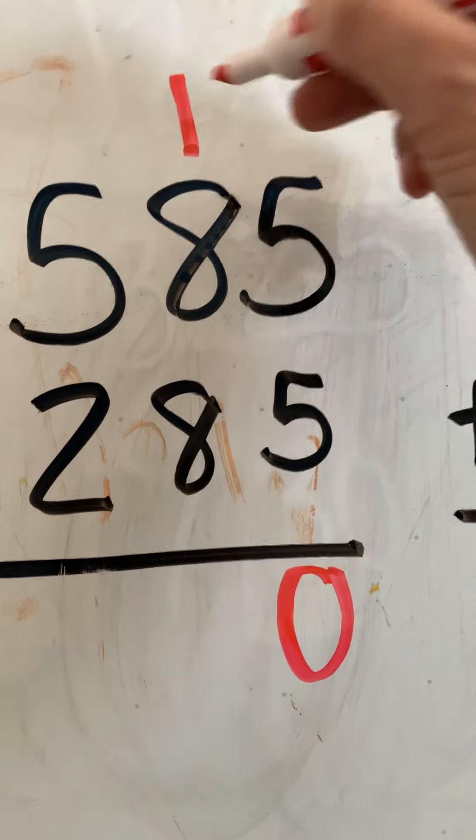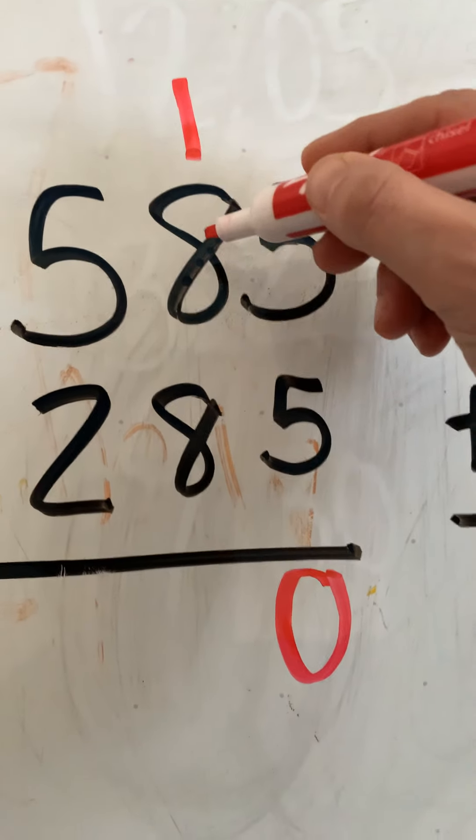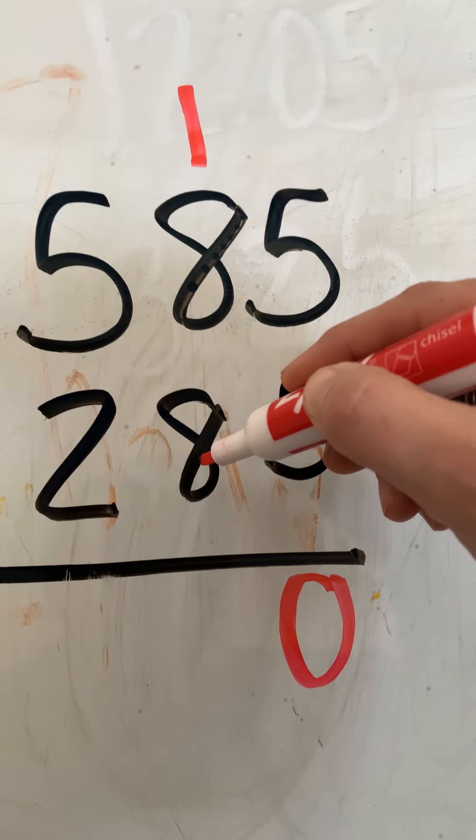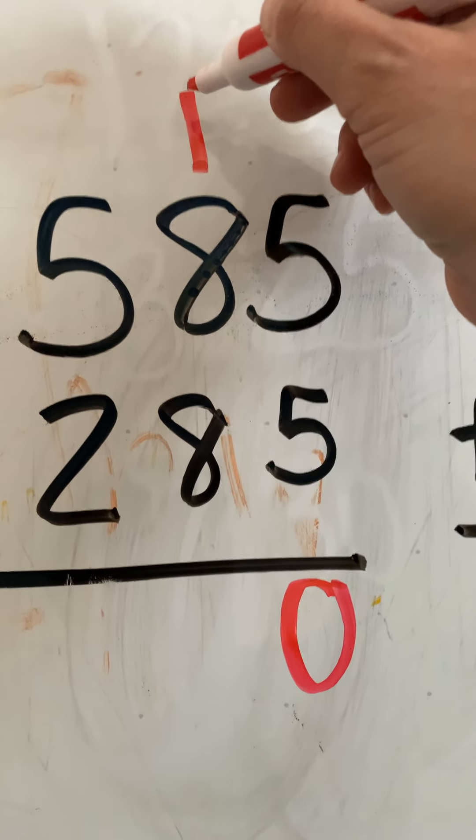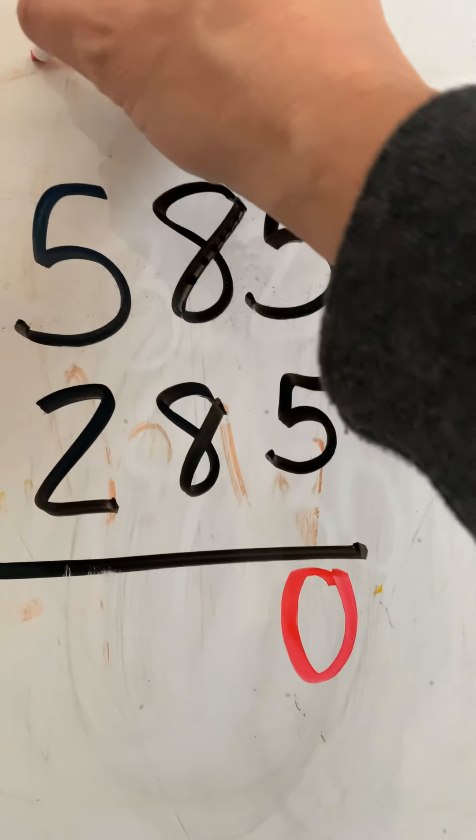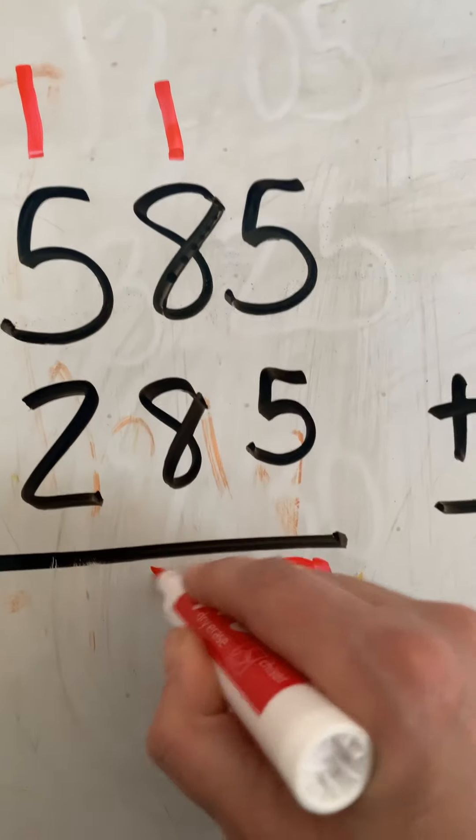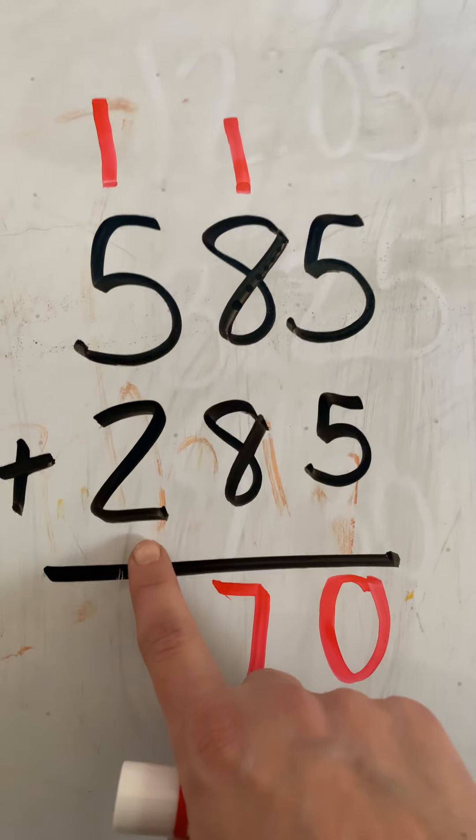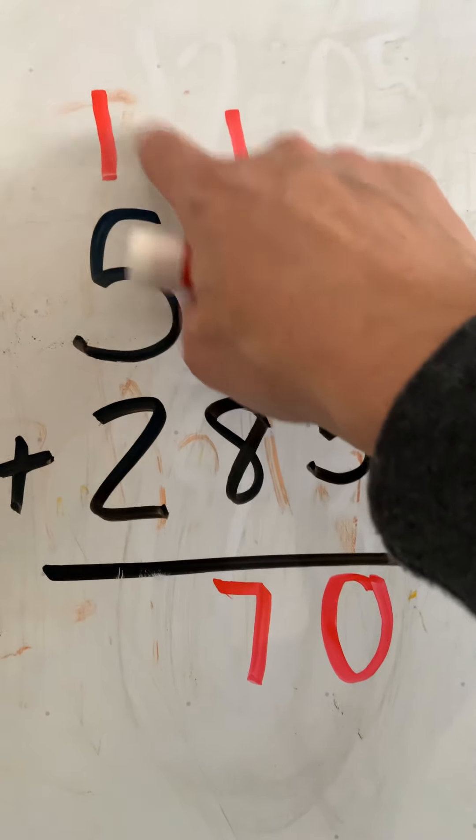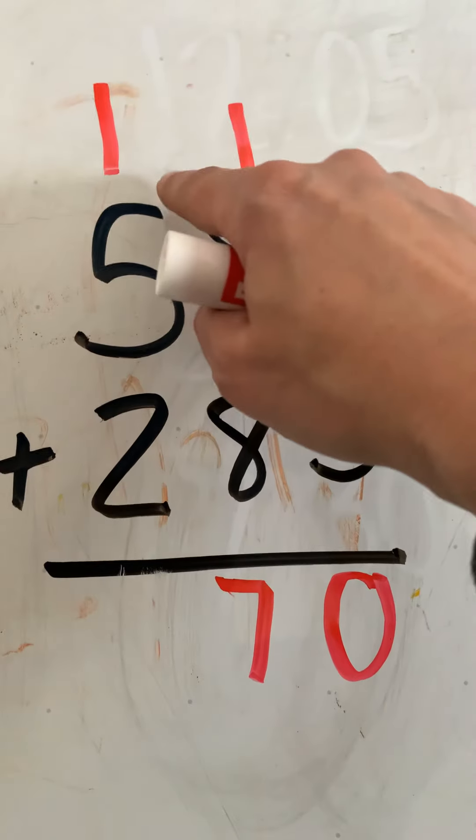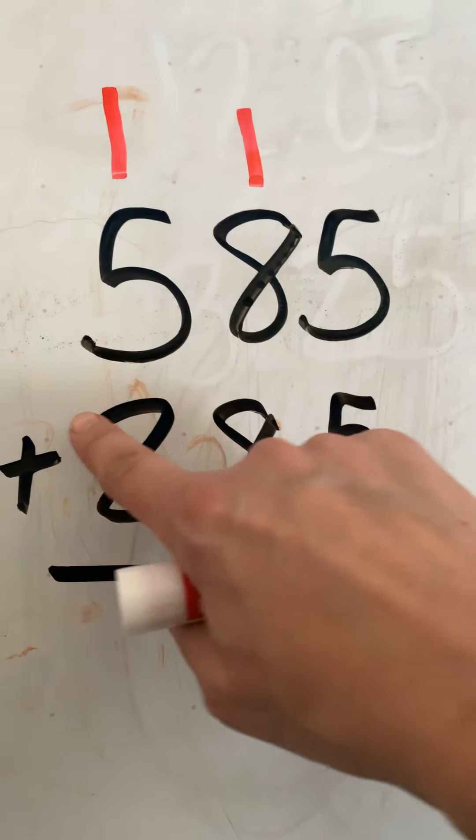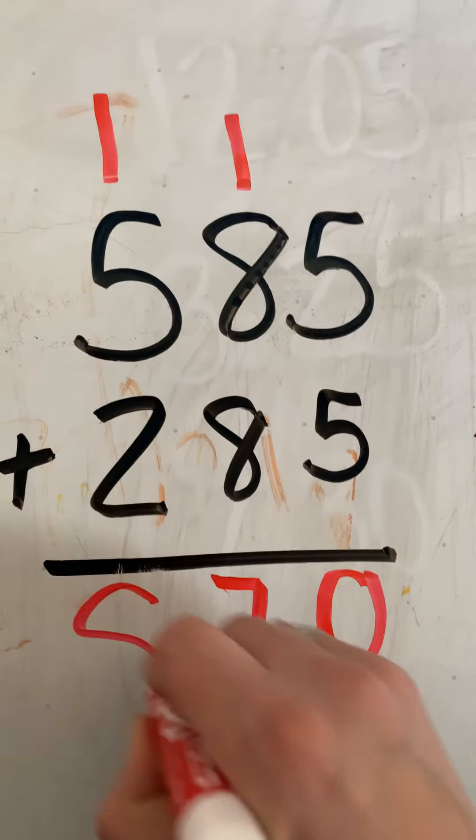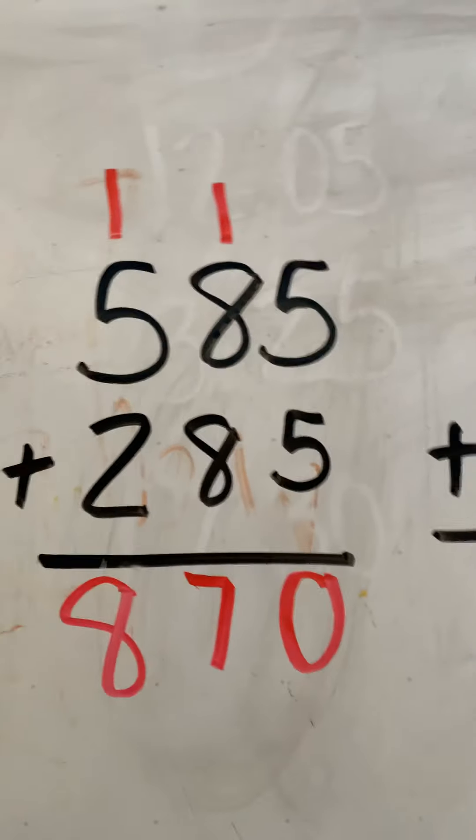You need to bring that one up. So let's go ahead. 8 plus 8 equals 16, plus one more is 17. 17 is a 1 and a 7. Let's go to our hundreds column. Now don't forget you did all this work by bringing that 10 up. Don't forget to count it when you add. Ready? 5, 6, 7, 8. So your answer is 870.